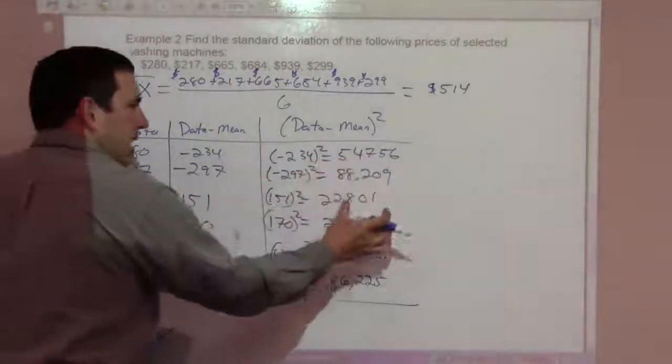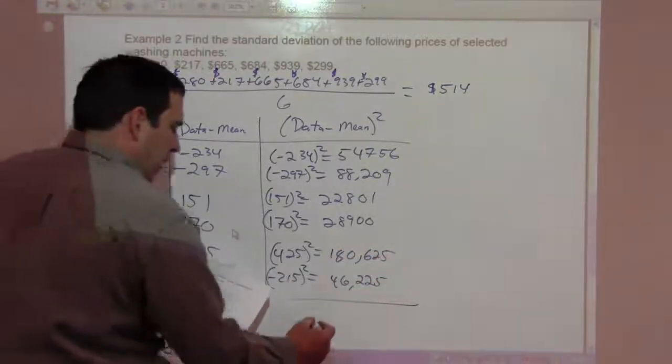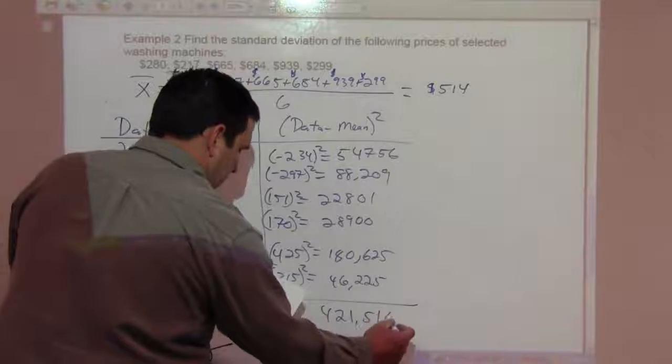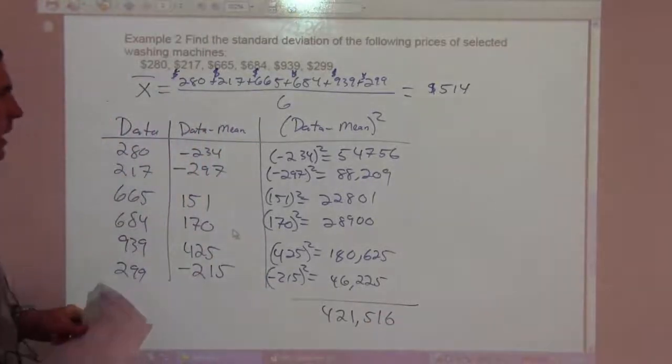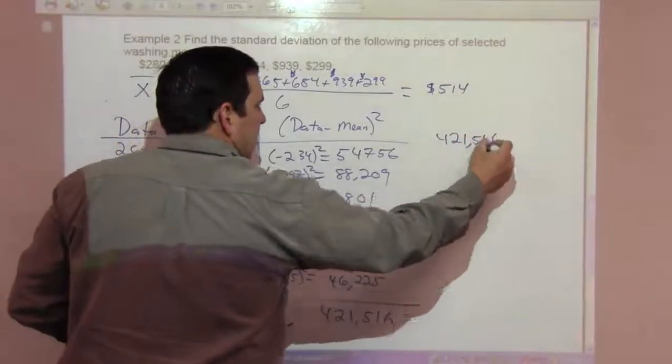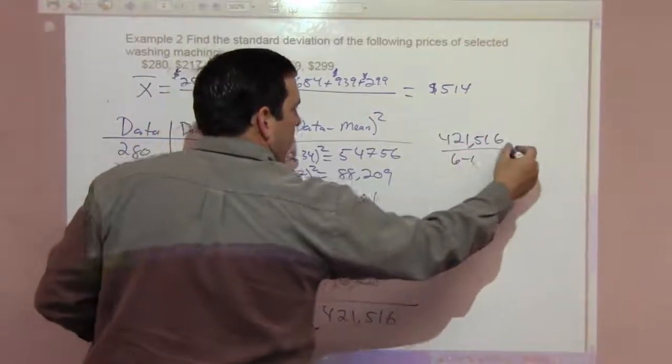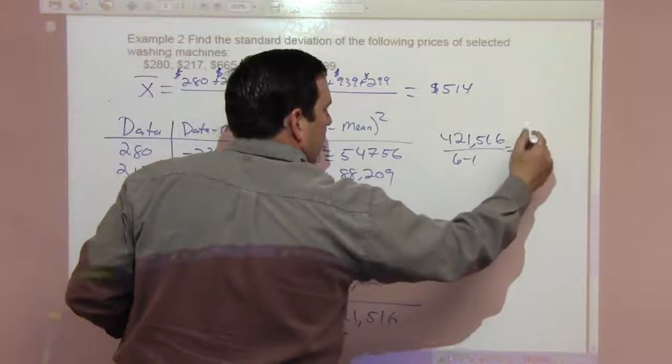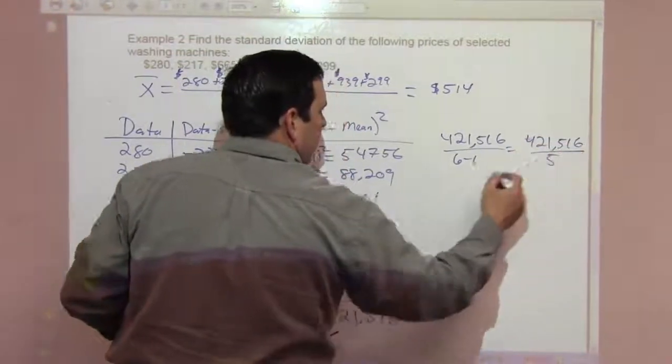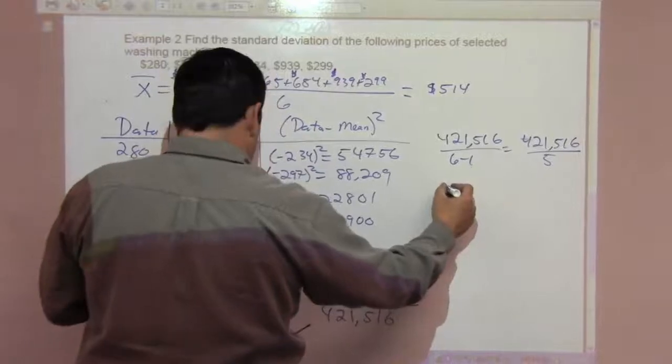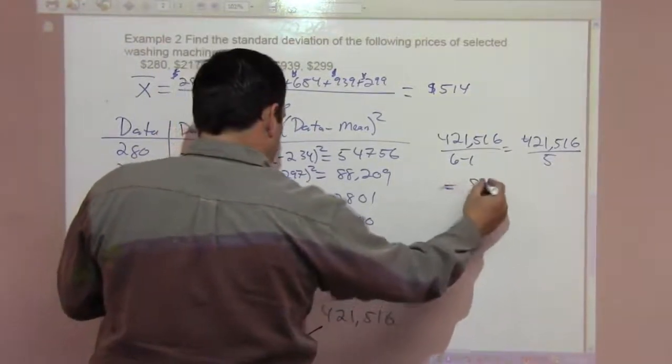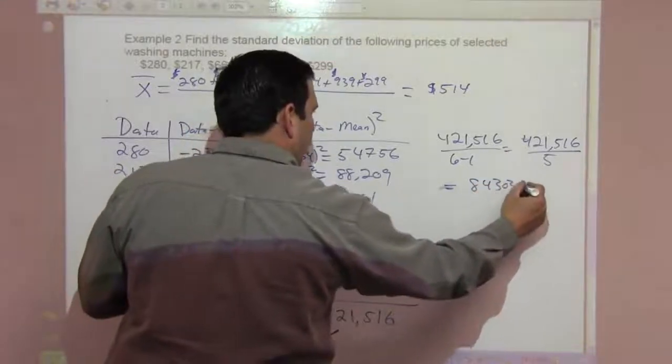The next step is to add all this up, and you get 421,516. So we're going to take that value, 421,516, divided by 6 minus 1. That's 421,516 over 5, and that's going to be 84,303.2.